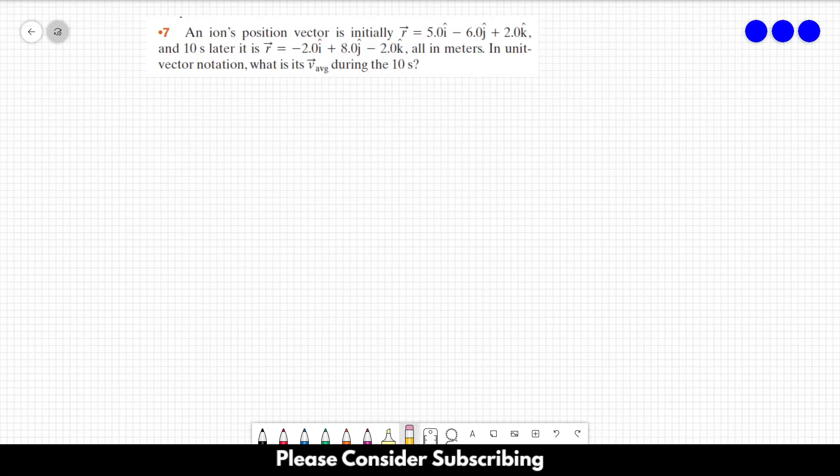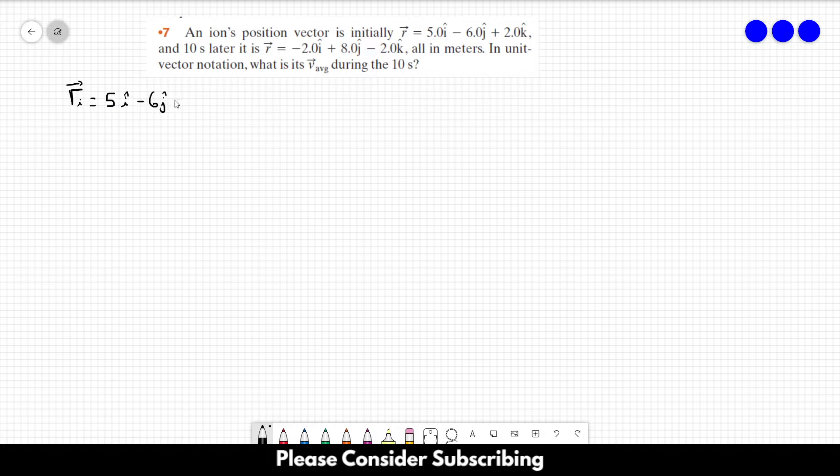Number 7, an ion's position vector is initially, so let's say it's the initial position, Ri, is equal to 5 in the I direction, minus 6 in the J direction, plus 2 in the K direction, and this is in meters.